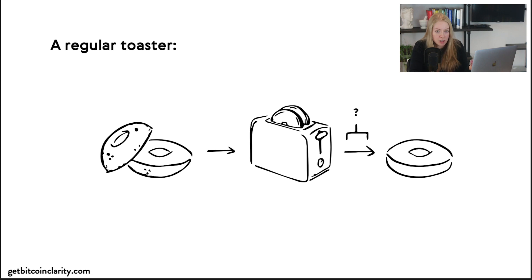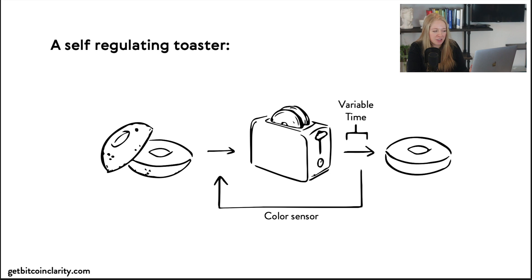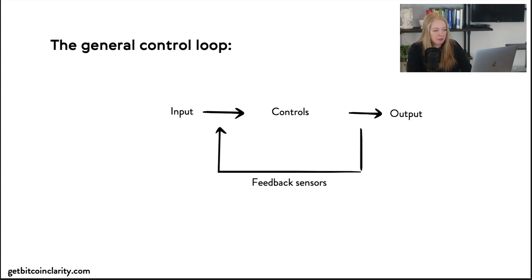Now you could, through trial and error, guess at how long you would need to keep this frozen bagel in the toaster, or you can develop a more sophisticated toaster that has its own feedback control loop, like a color sensor. So here you have a color sensor that's detecting if it's that light golden brown color, and then it just stops it when it's time.